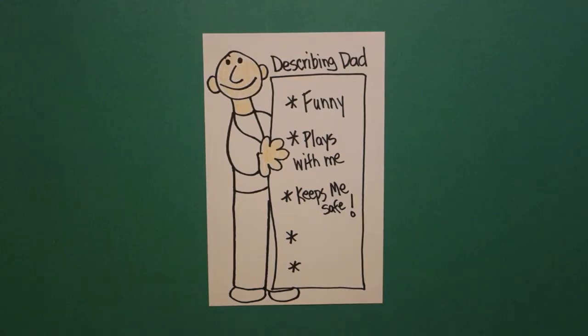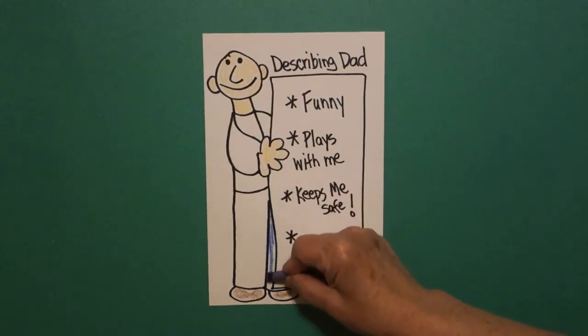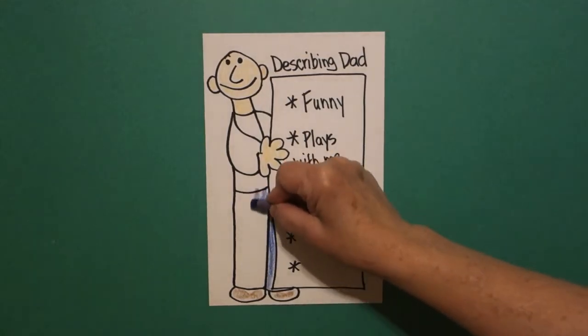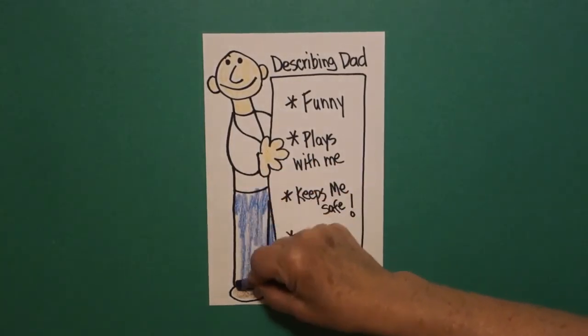Next, I'm going to give dad some brown shoes down here at the bottom. I'm going to put him in some blue jeans. This is his leg and this is his leg. I'm going to give him some blue jeans.